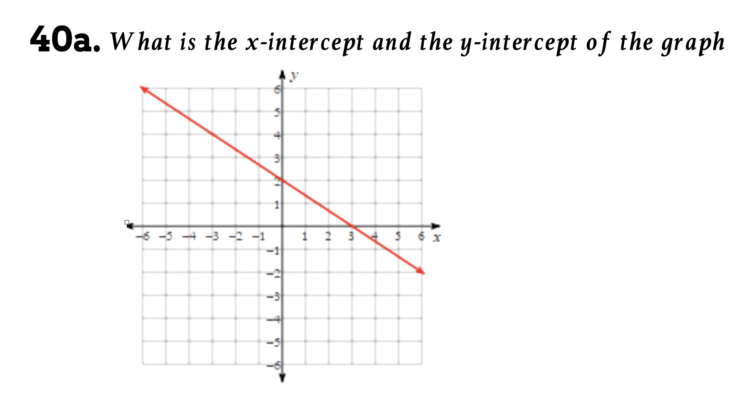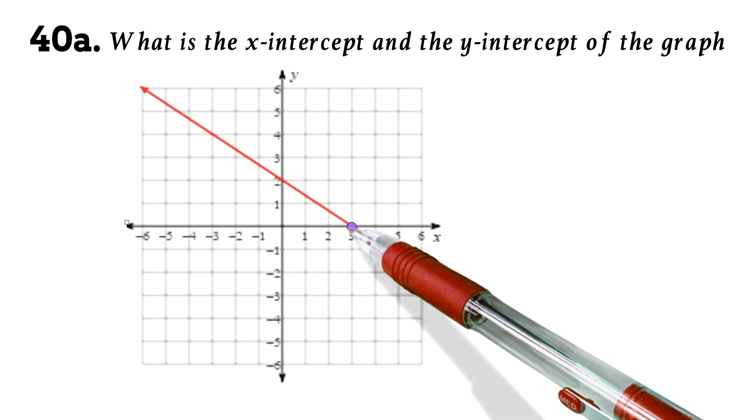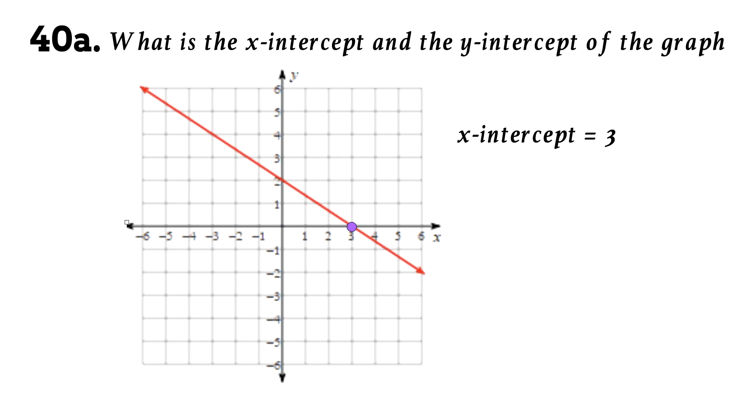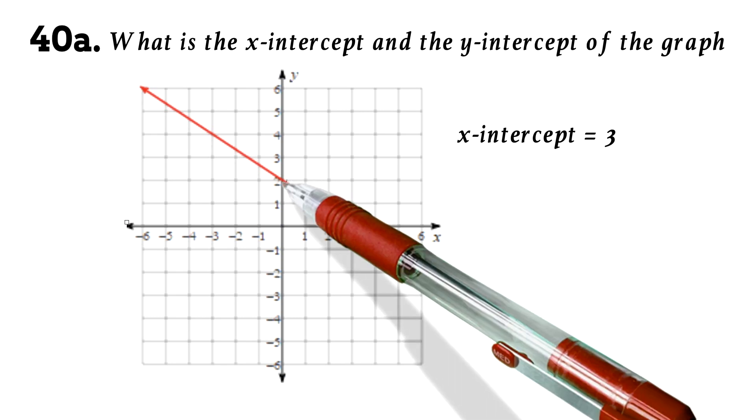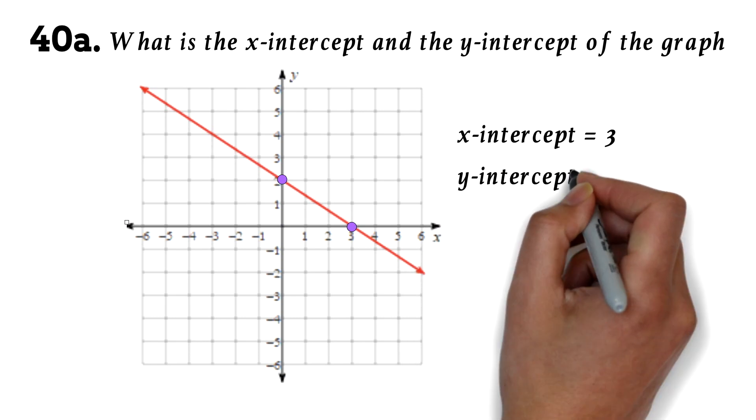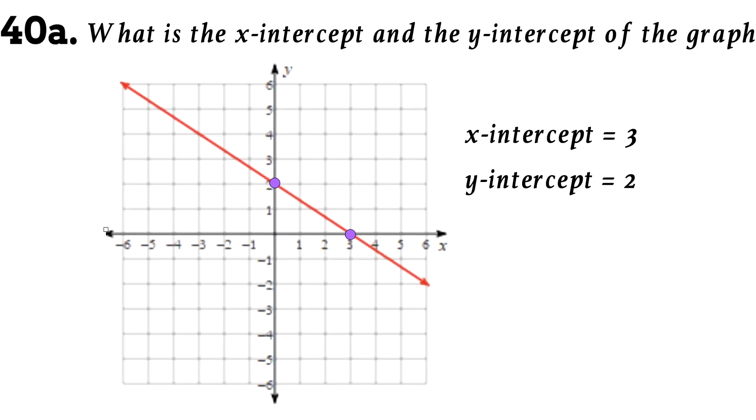The x-intercept is where the line meets the x-axis. Here, the line meets the x-axis at 3, so the x-intercept is 3. The y-intercept is where the graph meets the y-axis. Here, the line meets the y-axis at 2, so the y-intercept is 2. This is as easy as it gets. If you can locate where the graphs meet the axis, you can find your intercepts.